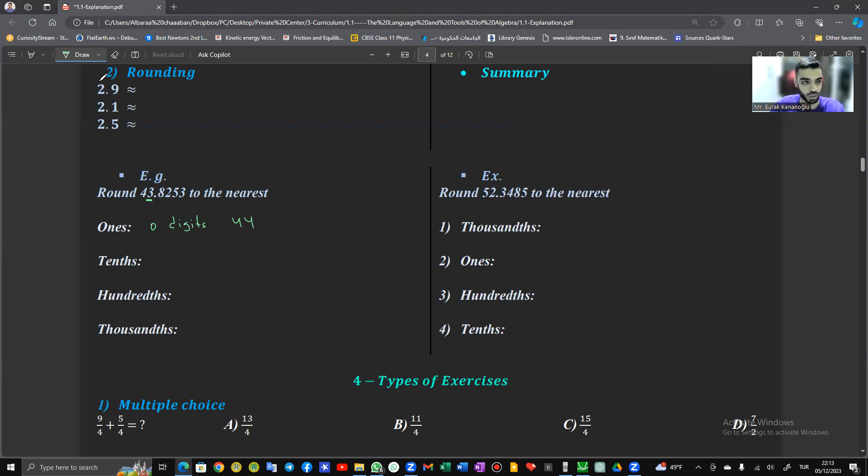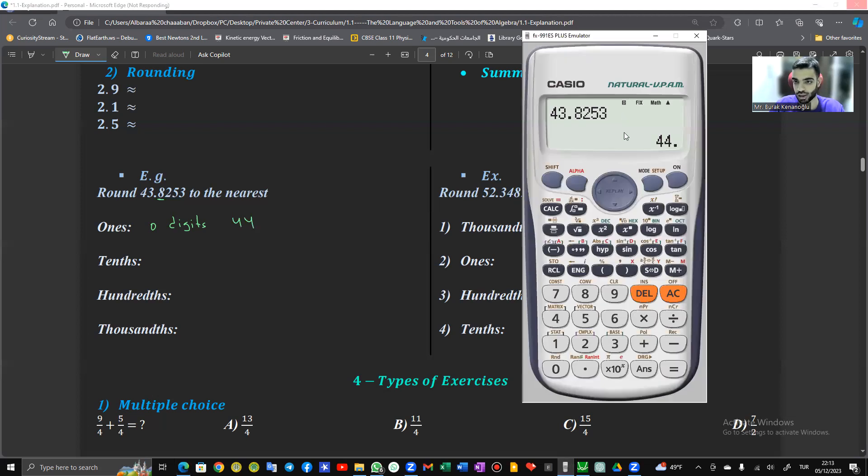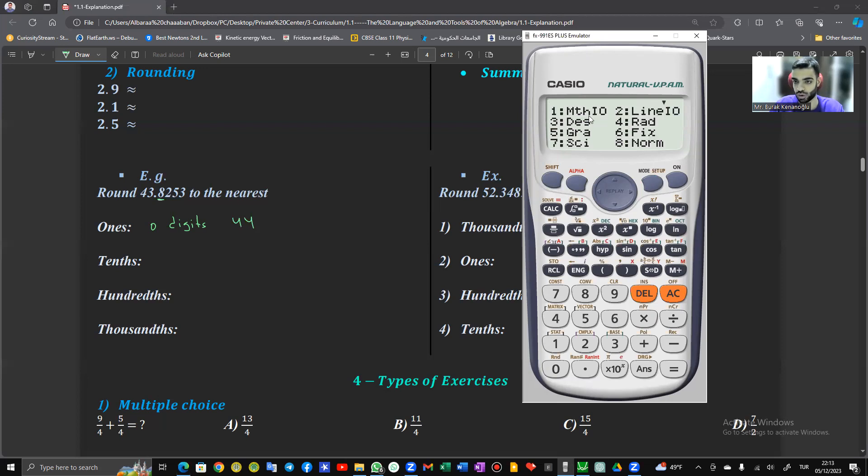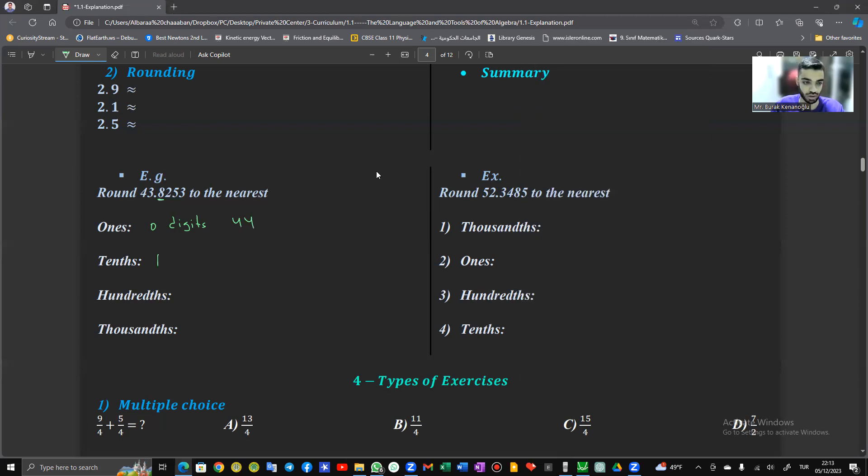Now we have to round to the nearest tens and that to the nearest tens is eight here. And here how many numbers after the decimal? We have only one number. So we go to the Casio calculator and we go to the shift mode six. Here we choose one digit and as you can see, it's forty-three point eight. So here we have one digit.